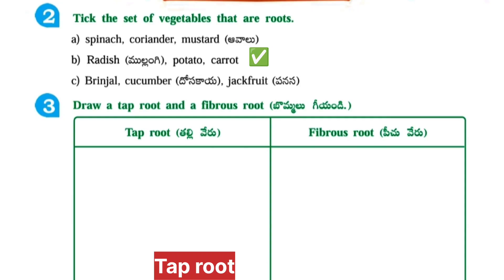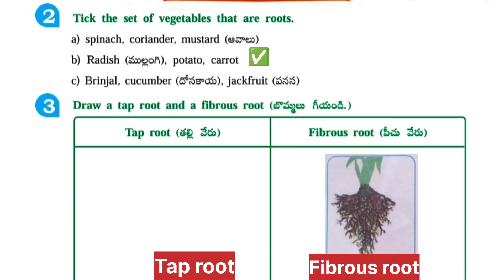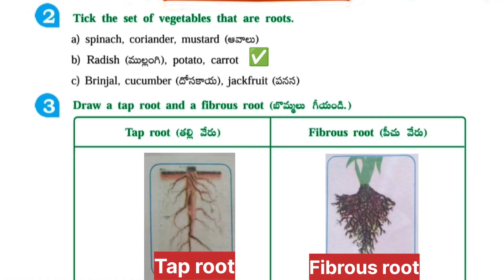Next, pick the set of vegetables that are roots. Answer: radish, potato, and carrot are roots. Next, fourth one: draw a taproot and a fibrous root. Here you have to draw a taproot and fibrous root.